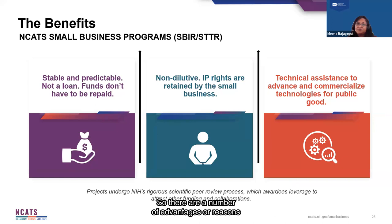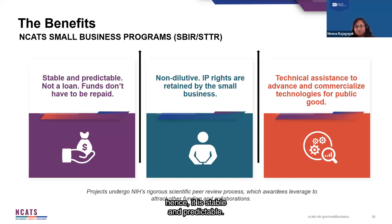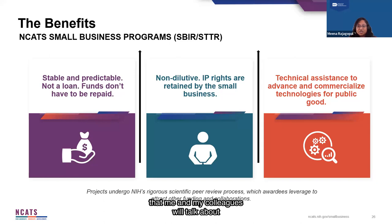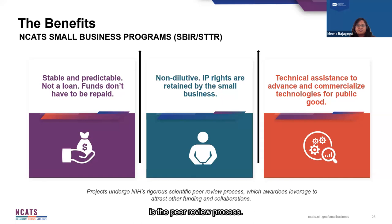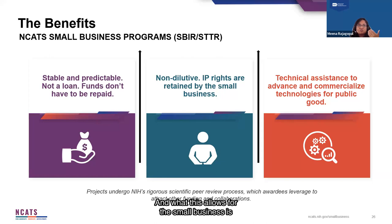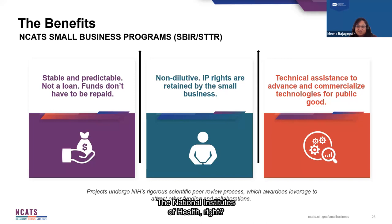There are a number of advantages or reasons why a small business should apply to the NIH Small Business Program. The budget tracks the agency's budget, so it is stable and predictable. The funds are non-dilutive, meaning the IP rights belong to the company. And once awarded, there are several resources that small businesses can leverage to further develop their technology or product. One additional benefit is the peer review process — every application undergoes rigorous peer review at the Center for Scientific Review. This allows the small business a chance to go outside of NIH looking for funds and other collaborations because their science is now validated by the National Institutes of Health.